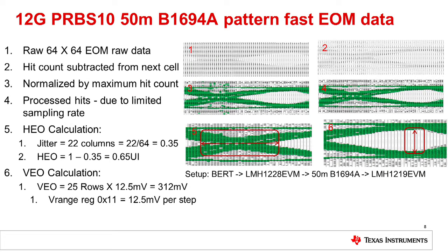We followed the same exact procedure, but this time using LMH1219 EVM with 50 meters of building cable instead of 3 meters, and a PRBS pattern instead of a clock pattern. Waveform 1 is the raw data before processing, waveform 2 is the vertical subtraction of adjacent cells, and waveforms 3 and 4 are processed as described earlier. Using this diagram, jitter is about 22 columns: 22 divided by 64 is approximately 0.35 UI, so 1 minus 0.35 gives us 0.65 UI of horizontal eye opening. We also have 25 rows, giving 25 times 12.5 equals 312 millivolts of vertical eye opening.